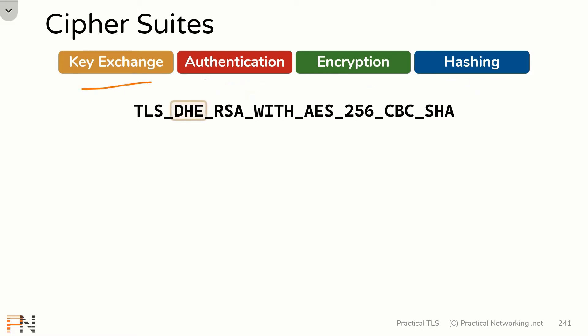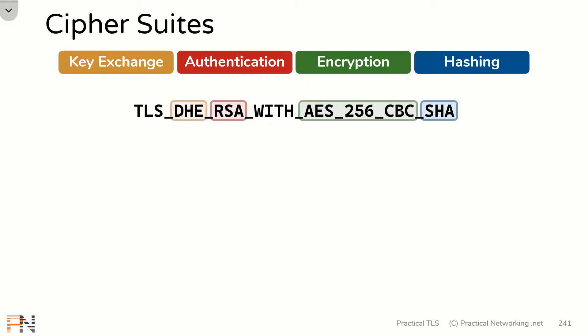DHE is our key exchange. RSA is our authentication algorithm. AES256CBC is our symmetric encryption protocol. And finally, at the end, SHA is what we're using for hashing.